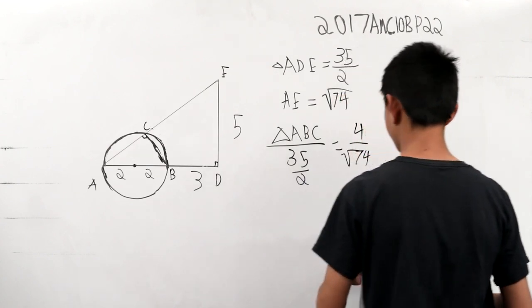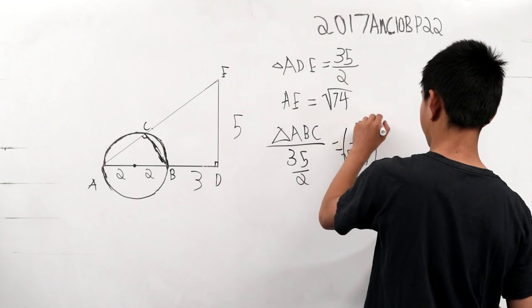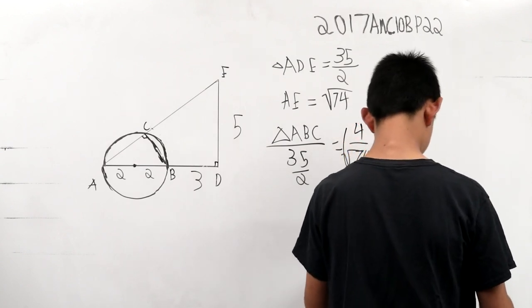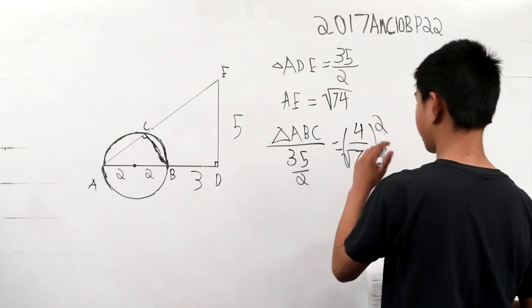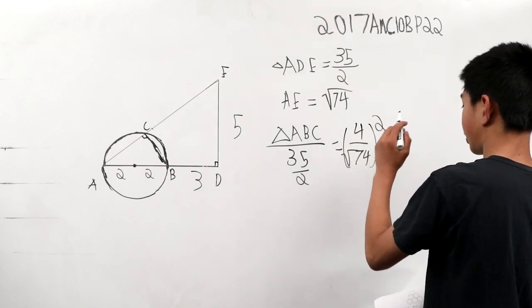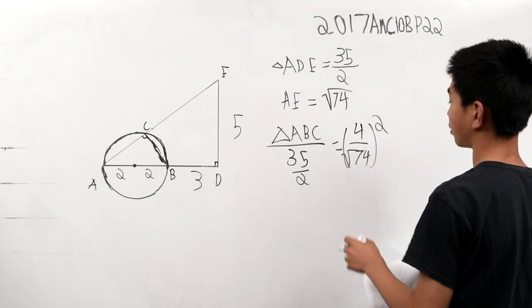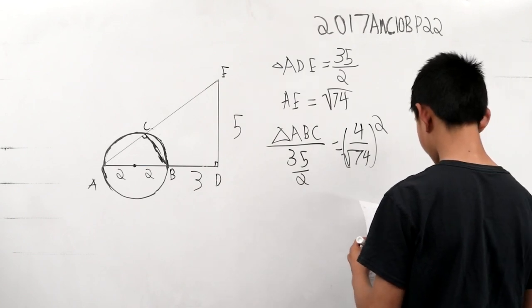And now we have to, we want to square it here. So when we square root, what we can do is you get the square of this number, 16 74ths, and then multiply it by 2 35ths.